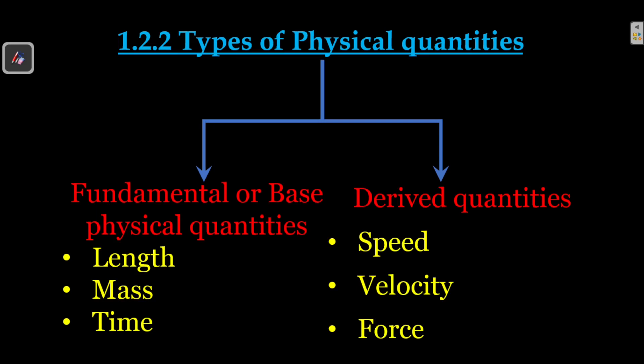The set of quantities of fundamental importance from which all other possible quantities can be derived are called fundamental quantities. These are length, mass, time, electric current, thermodynamic temperature, amount of substance, and luminous intensity — seven quantities in total. All other possible quantities are derived from these, which is why they are called fundamental or base physical quantities.